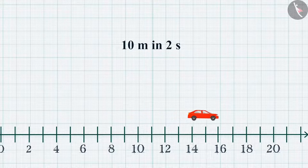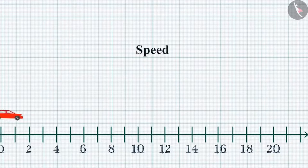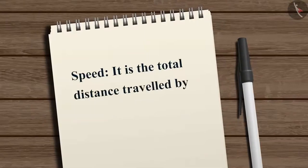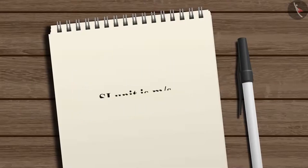Now here comes the concept of speed, which is the measurement of the rate of motion. It is the total distance traveled by an object in unit time. Its SI unit is meter per second.